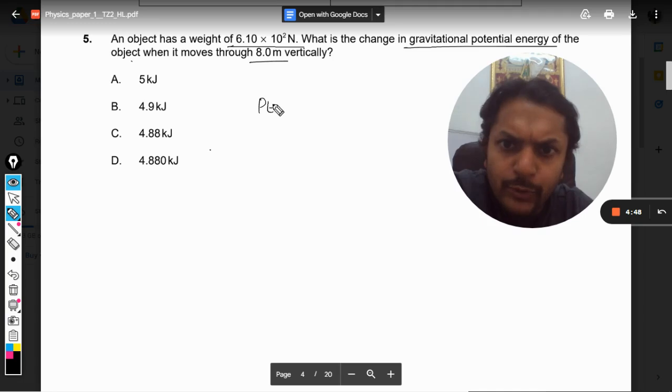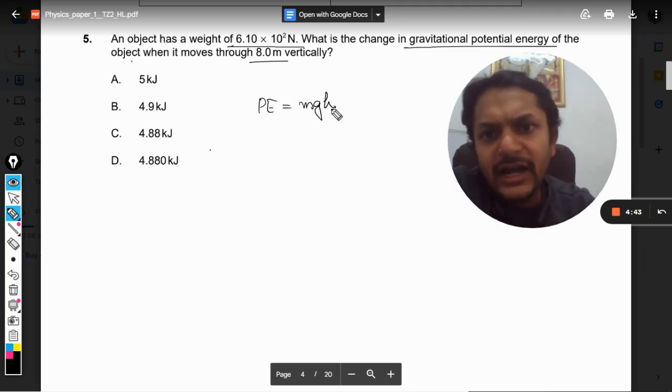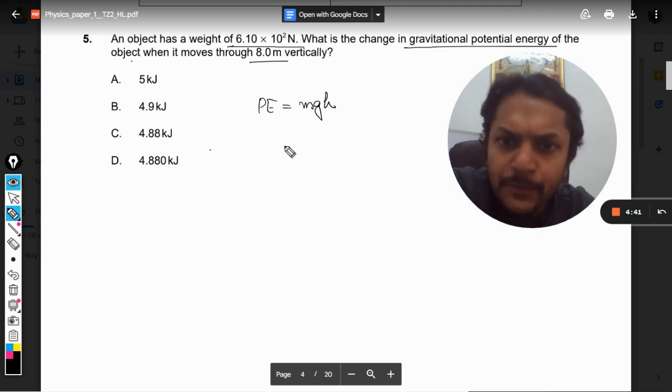If we want to talk about gravitational potential energy, we have a very simple formula that is mgh. And you all know this already. So mg will be the weight.